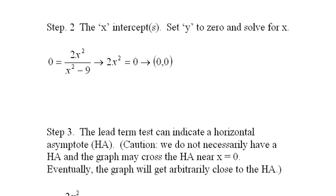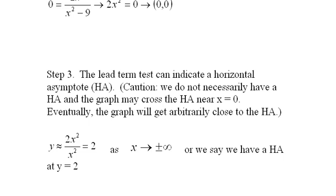Step 3, the lead term test. The lead term test can indicate a horizontal asymptote, HA. Caution: we do not necessarily have to have a horizontal asymptote, and the graph may cross the horizontal asymptote near 0.